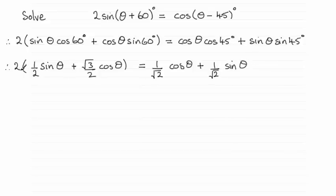Now at this point, if I multiply through by 2, these 2's will cancel out, leaving me with sin θ + √3 cos θ. Next, I want to multiply both sides by √2 to get rid of the denominator. So if I do that, we therefore have √2